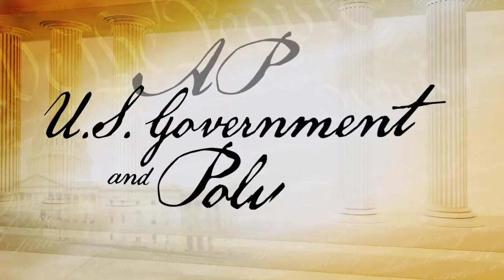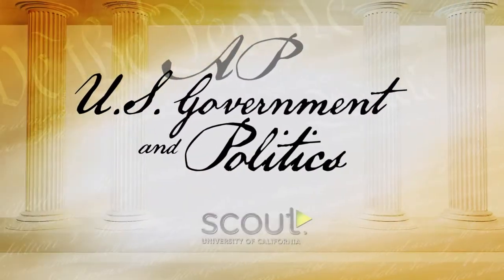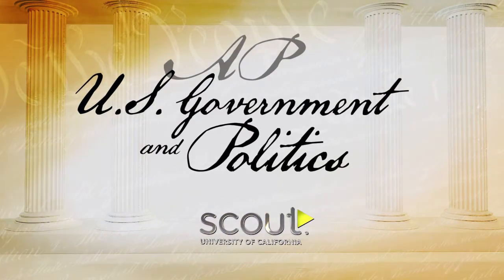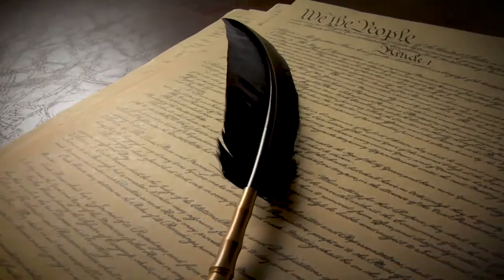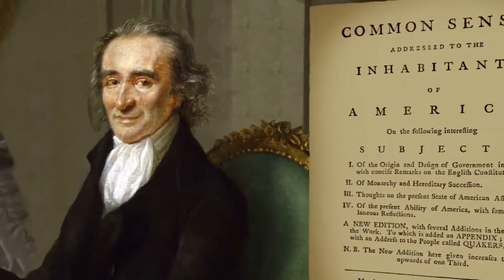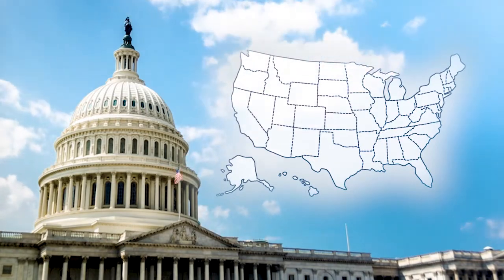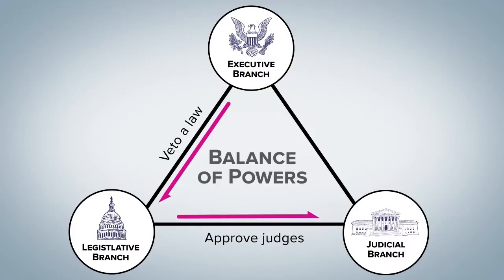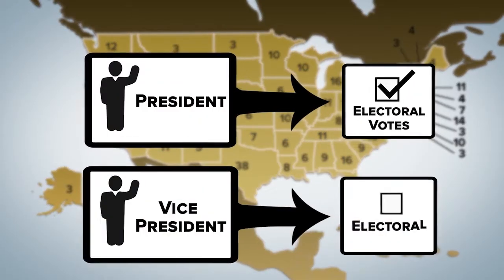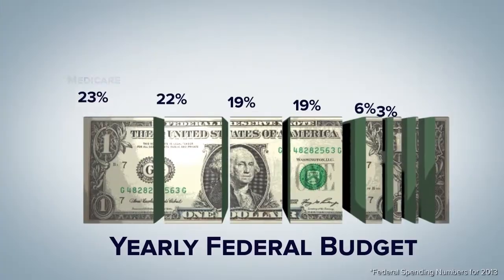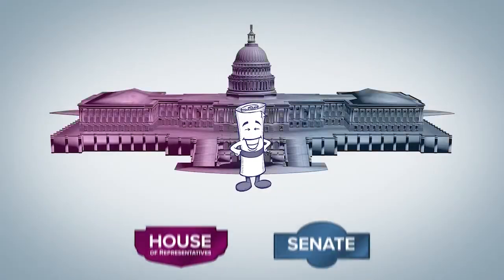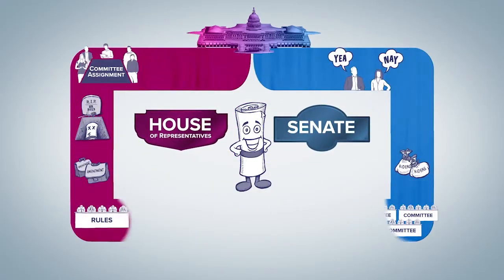Advanced Placement U.S. Government and Politics with Scout from University of California. Gain a profound understanding of the history, organization, and functions of the United States government. This challenging course is designed to help students pass the AP exam. Immersive graphics and dynamic storytelling create a truly compelling and educational experience.